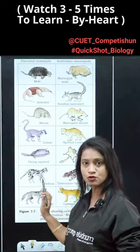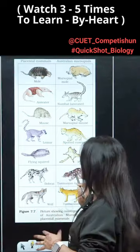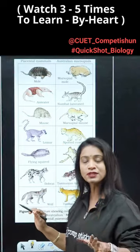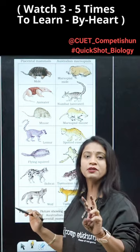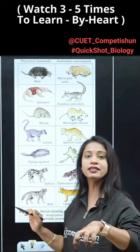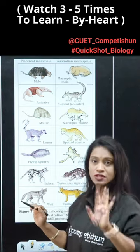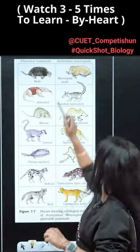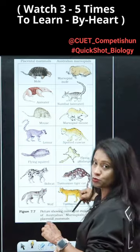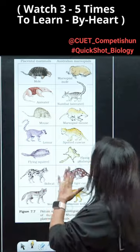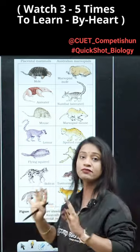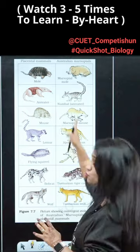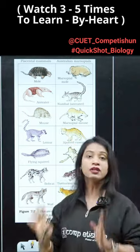This is a very good example, children, for convergent evolution related to adaptive radiation. I have told you that if there are two adaptive radiations in one area, then it will be called convergent evolution. You can see placental mammals and Australian marsupials — these are all in Australia. But this is one adaptive radiation, this is two. So, convergent evolution.